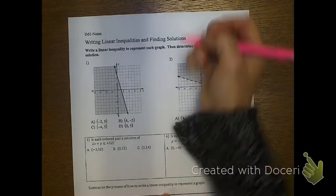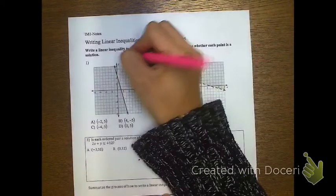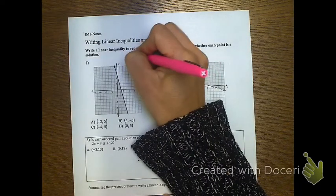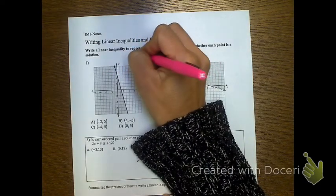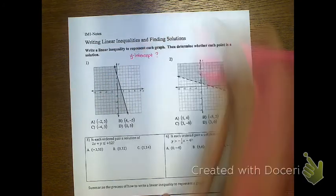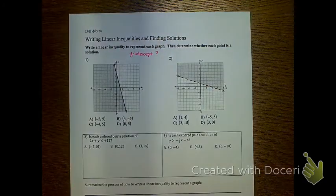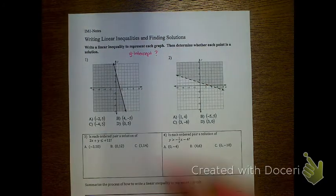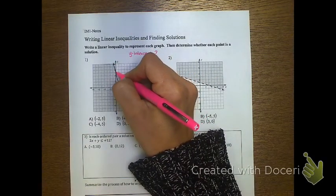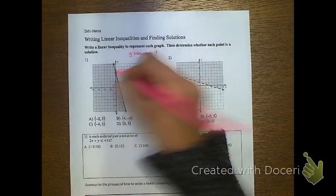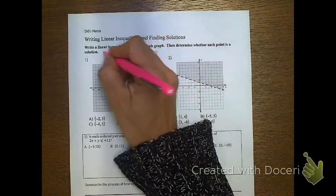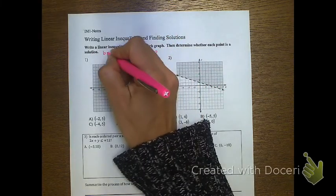The first thing you want to do is figure out what your y-intercept is. To find the y-intercept, we look at the point where the line crosses the y-axis, which is right here. So the y-intercept would be 5, meaning our b value is 5.